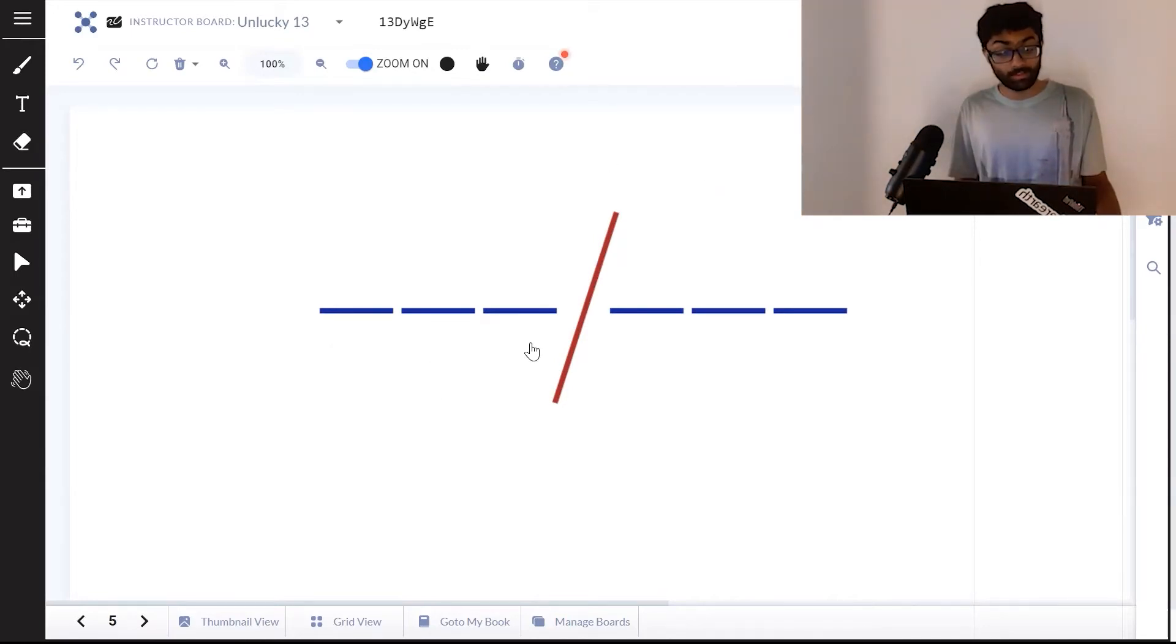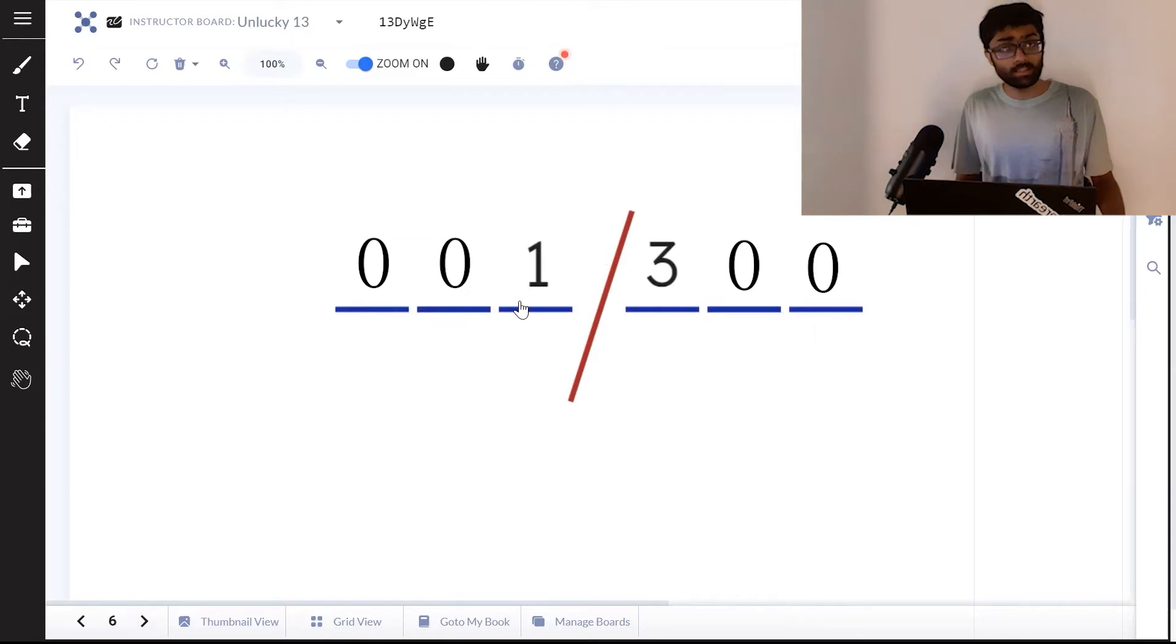Similarly, there are 980 valid strings on the right. A valid string means it does not have 13 in it. Let the total number of valid three-digit strings be x. Left and right are both x, and x equals 980. The total number of valid strings will be 980 times 980. However, this is not our final result because we can have a scenario where the last digit of the first string is 1 and the first digit of the second string is 3.